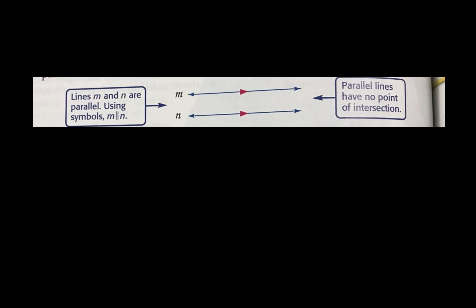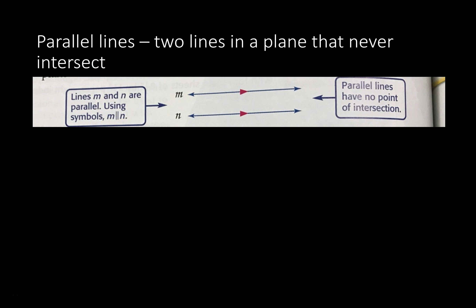First we're going to talk about parallel lines. Parallel lines have no point of intersection. We can say that these are parallel by using this M and then double line N. Parallel lines are two lines in a plane that never intersect.